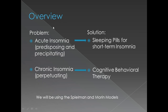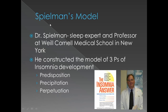The overview of the presentation covers the problem of acute insomnia and chronic insomnia. Acute insomnia has predisposing and precipitating factors, and the short-term solution is sleeping pills. Whereas chronic insomnia has a life of its own — it has perpetuating factors. The only effective treatment for chronic insomnia is cognitive behavioral therapy. We will be using the Spielman and Morin models to explain it.